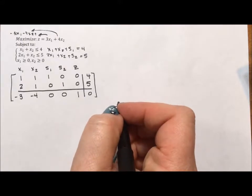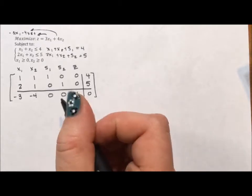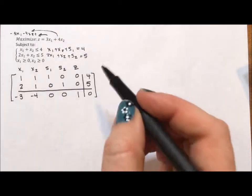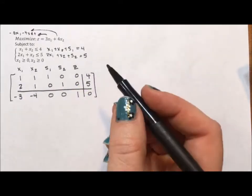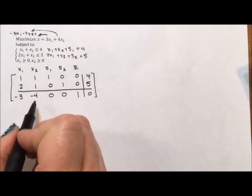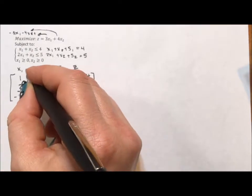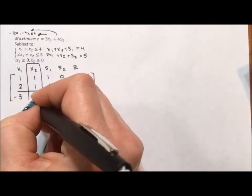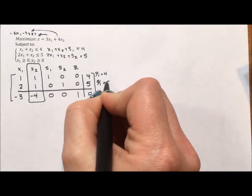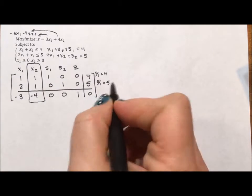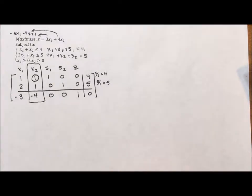So what we need to do is we need to find a pivot element, and we'll use that pivot element to zero out the numbers above and below. To figure that out, we find the ratio of this answer column with the numbers in our pivot column. So the pivot column is found by finding the biggest negative, so negative 4. And so we take 4 divided by 1, 5 divided by 1. The 1s come from here. The smallest number indicates our pivot element.